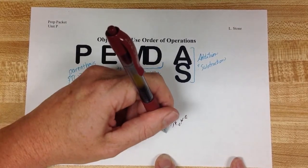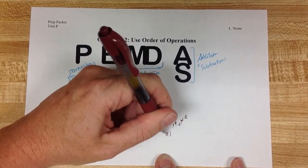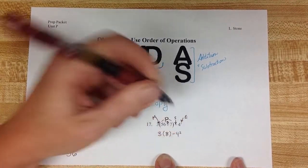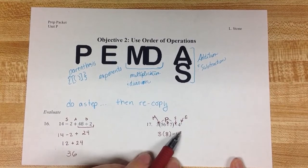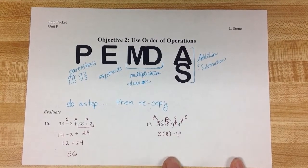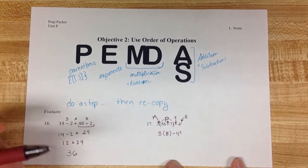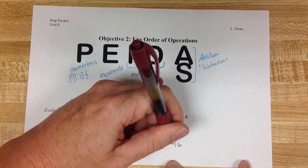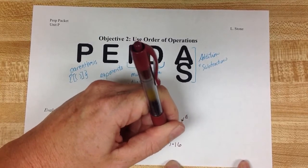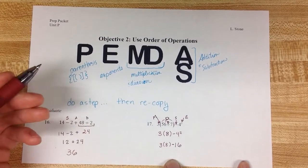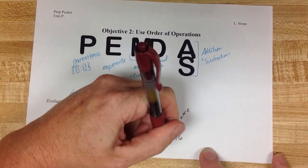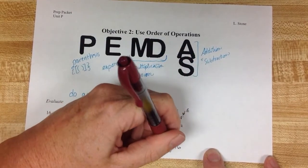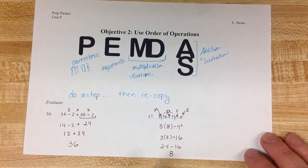So 56 divided by 7 gives me 8. Then I recopy the rest of the steps. The 3 on the outside, the 4 squared on the outside over here, the subtraction. 4 squared is my next step. And 4 when I square it gives me 16. The subtraction is still there. The multiplication is still there. 3 times 8 will give me 24. And when I subtract 16, my final answer is 8.